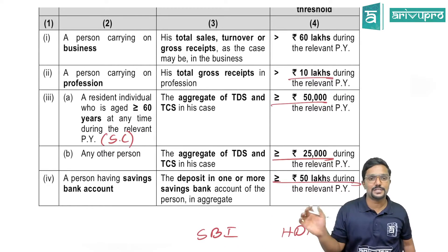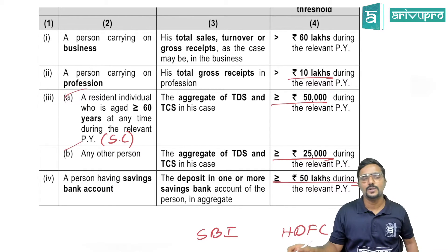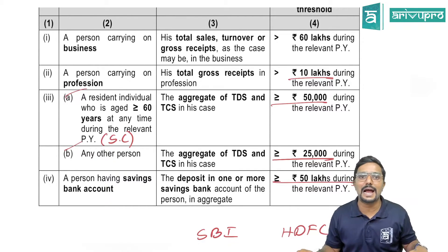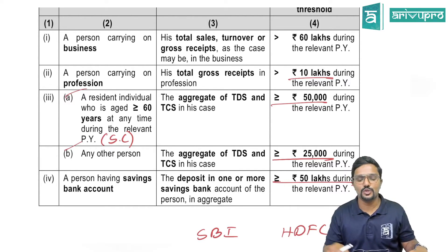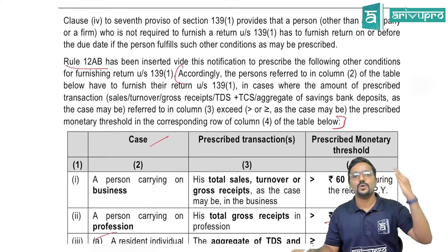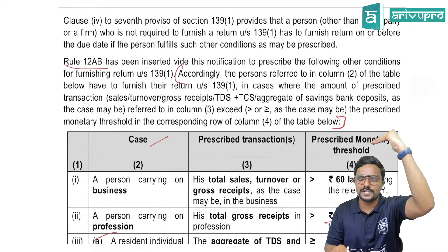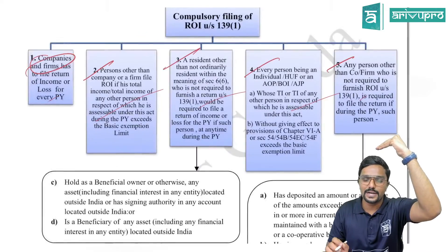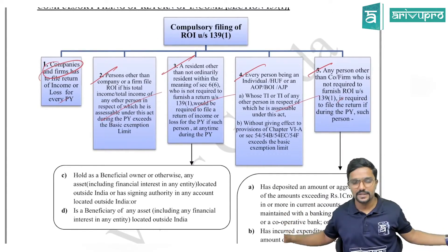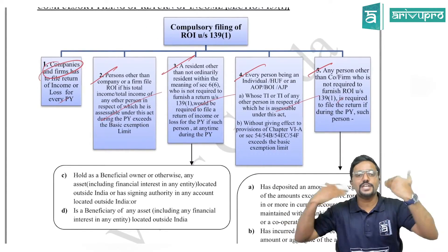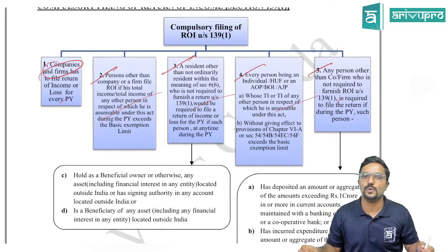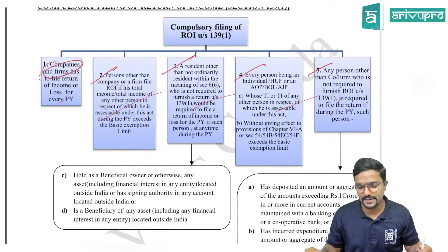For example, if I have two savings bank accounts — one with SBI with 30 lakh deposited and one with HDFC with 22 lakh — totalling 52 lakh — I must file my return. So these five cases — business turnover, profession gross receipts, TDS+TCS for senior citizens, TDS+TCS for others, and savings bank deposits — have been newly added through Rule 12AB. Whatever was already under Section 139(1) remains unchanged.